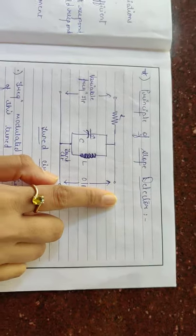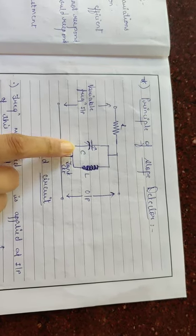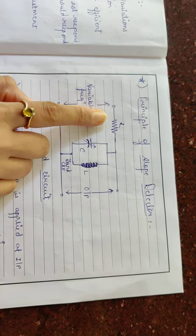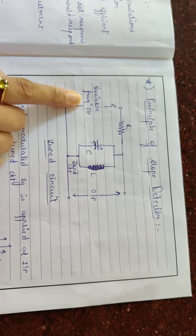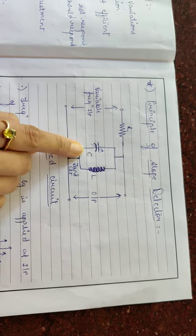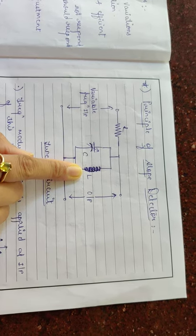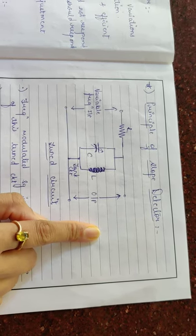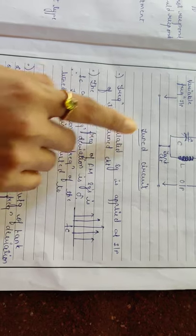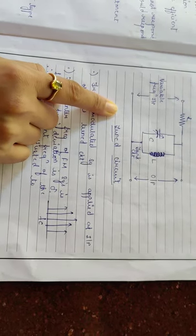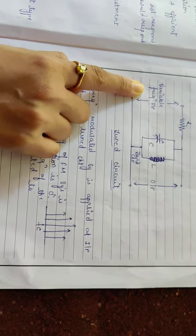Let us see the basic principle of the slope detector. In this diagram, we can see the tank circuit, which is made up of a capacitor and an inductor, and we have added one resistor. At the input, we apply a variable frequency input. As the frequency varies, through this resistor the capacitor charges and the value of the inductor varies, and accordingly the output also changes. The frequency modulated signal is applied at the input to this tuned circuit.